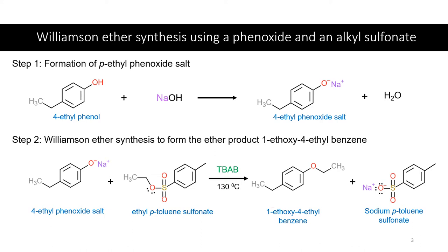In the first step, we have 4-ethylphenol, which has the OH group. Phenol is a slightly acidic molecule, so it can react with a strong base like sodium hydroxide in a simple acid-base reaction. When an acid and base react, we get the conjugate base form of the acid and water. So once we react these two, we get the 4-ethylphenoxide salt — a much stronger nucleophile.